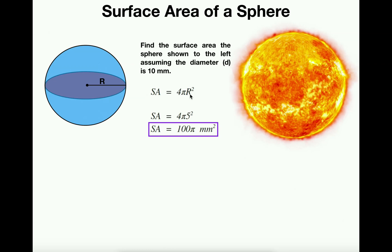So you need to know the radius. In our problem here, we want to find the surface area of the sphere shown to the left, assuming the diameter is 10 millimeters. Now if our diameter is 10 millimeters, that means our radius is half of that, so 5 millimeters.